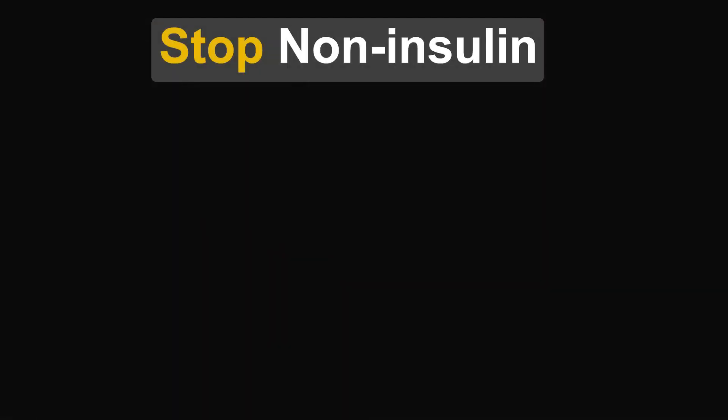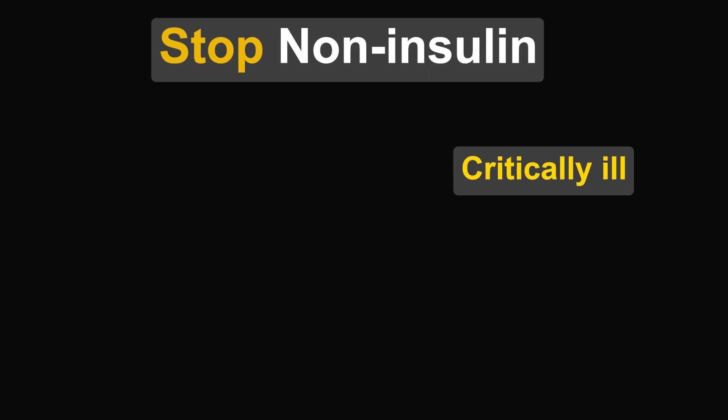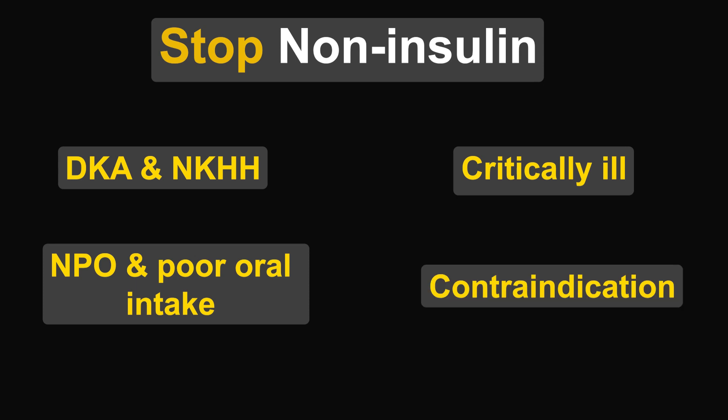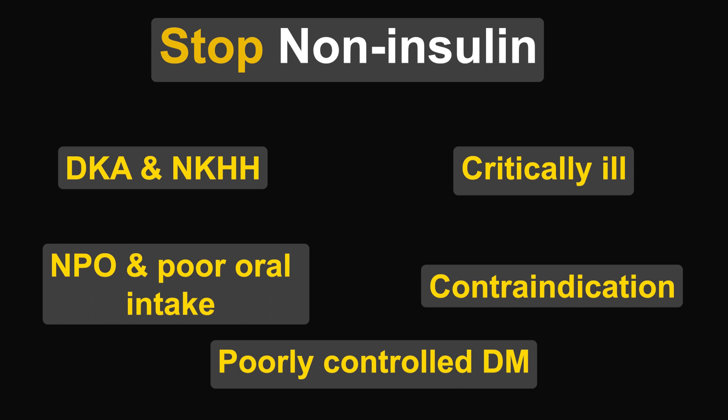We do stop all non-insulin-based treatments if one of the following is present: the patient is critically ill or in the ICU, DKA, non-ketotic hyperosmolar hyperglycemia, NPO status, poor oral intake, a specific contraindication to a particular agent, or the patient already has poorly controlled diabetes on presentation. If none of these apply — the patient is not critically ill, not hypoglycemic, diabetes is well controlled at home, and there are no specific contraindications — then it may be safe to continue certain non-insulin medications.